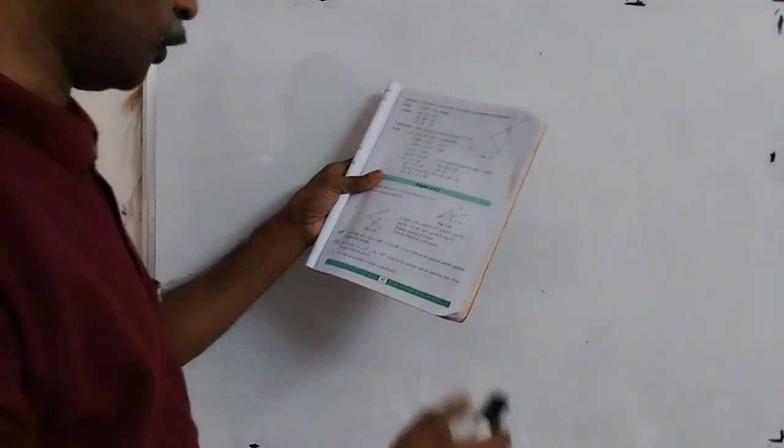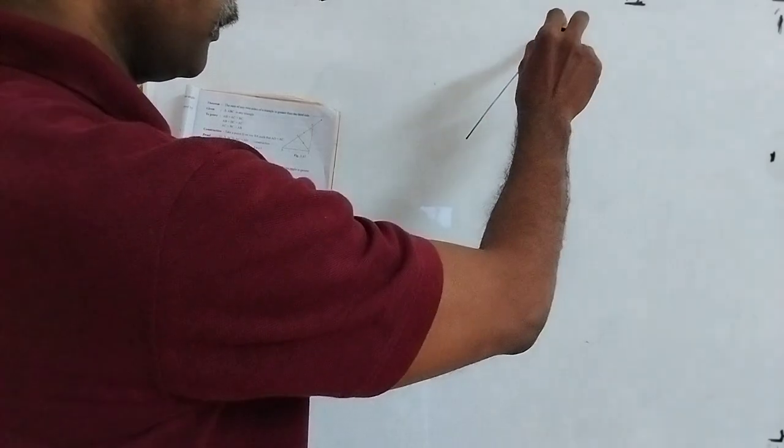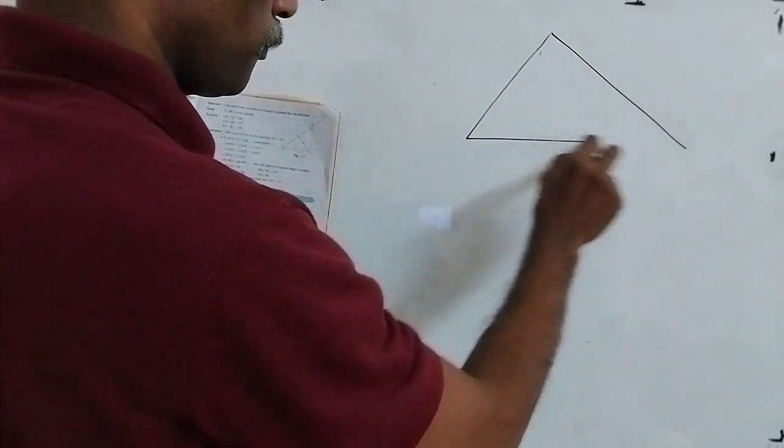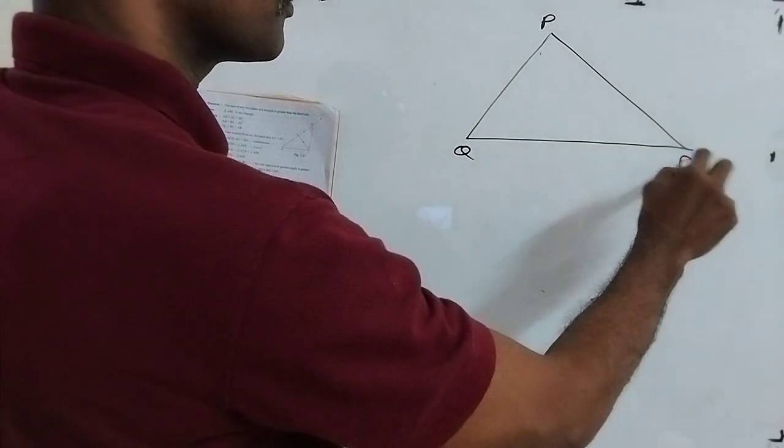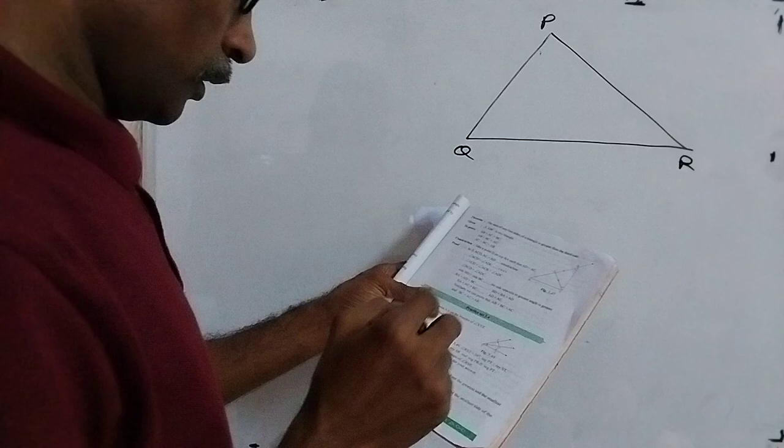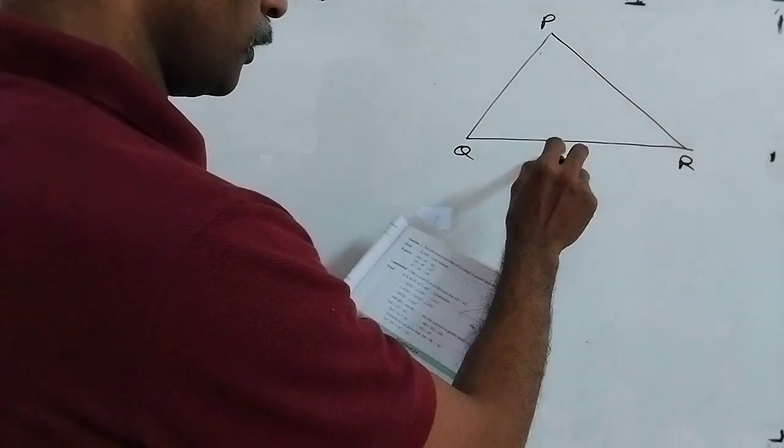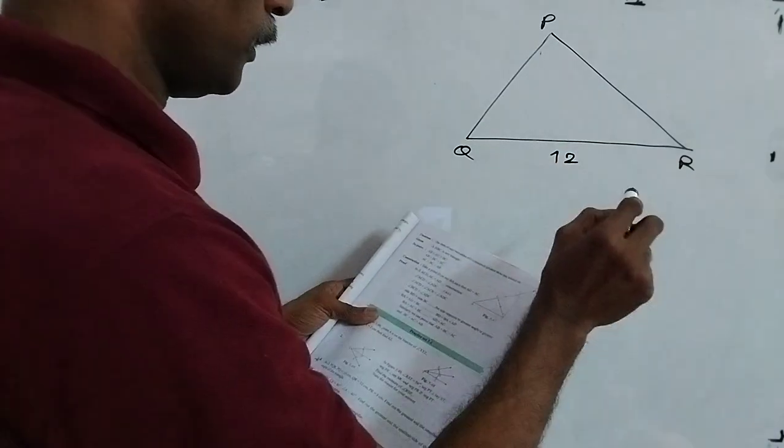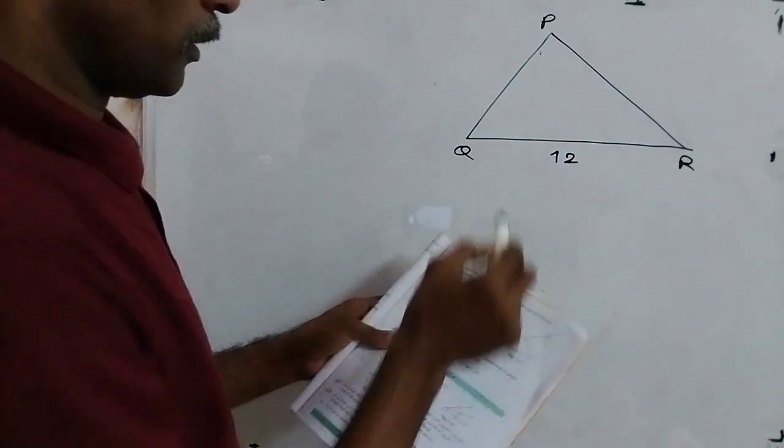In triangle PQR, suppose here, triangle PQR. In this triangle PQR, PQ is 10, QR is 12. QR is 12, PQ, EQ, this is QR.